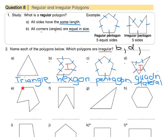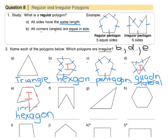For E, we're going to count the sides: 1, 2, 3, 4, 5, 6. A shape with 6 sides is called a hexagon. But this one looks like a funny shape because the sides are not equal in length, and neither are the angles. Therefore, this is an irregular hexagon, and we're going to write E up here. It's an irregular hexagon.